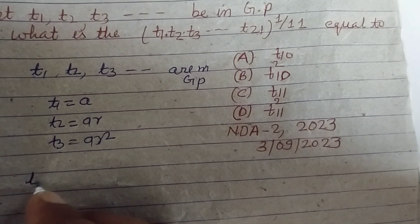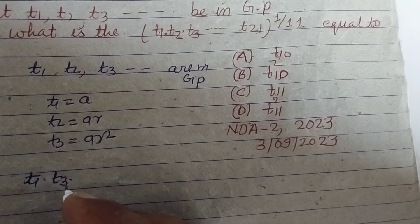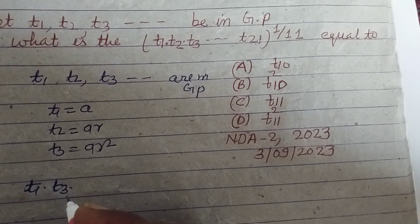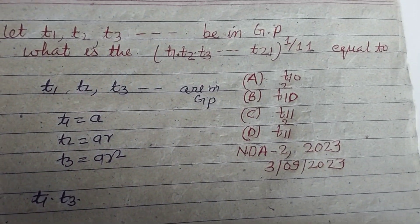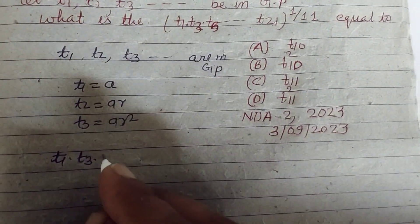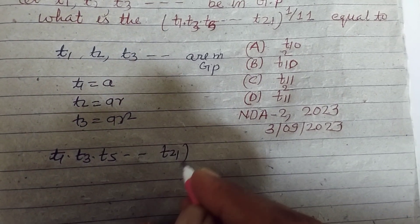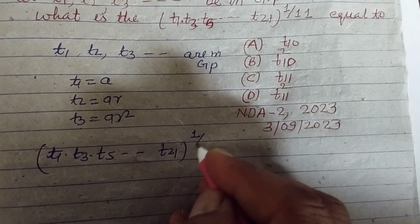So t1 into t3, t1, t3, t5 dot dot t21 to the power 1 by 11.